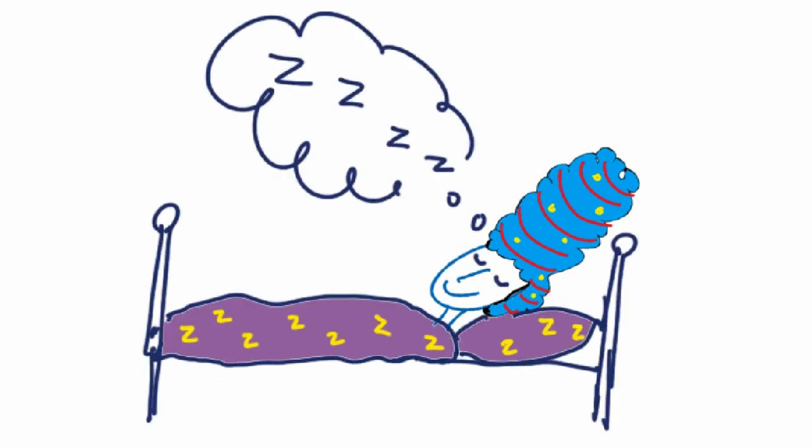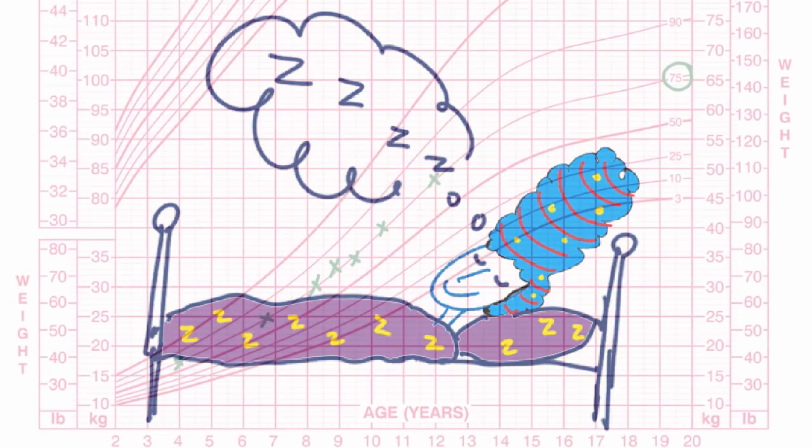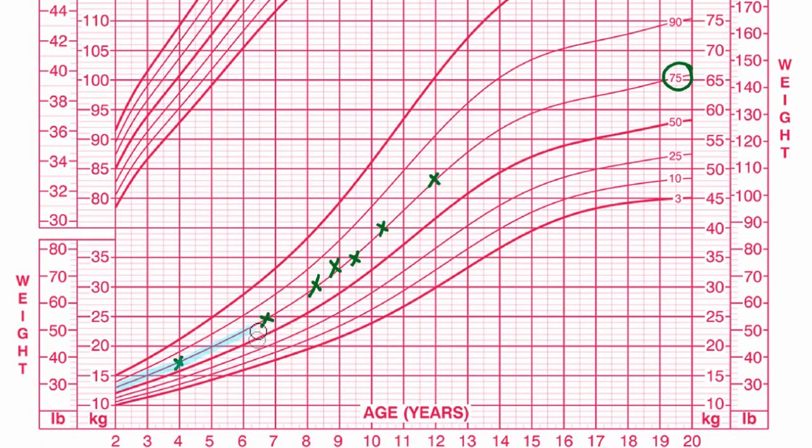Now, the principle we're going on, and as we'll see later, it is only a general guide, is that throughout our lives, as long as we're well-nourished, we tend to stay on the same percentile curve.